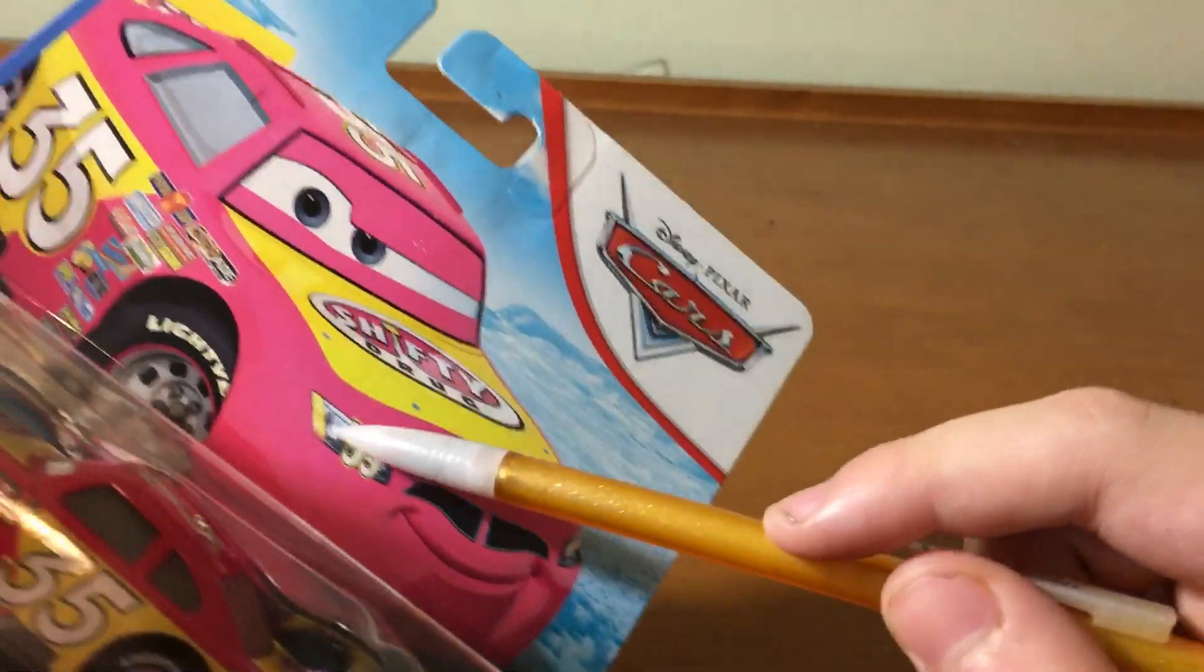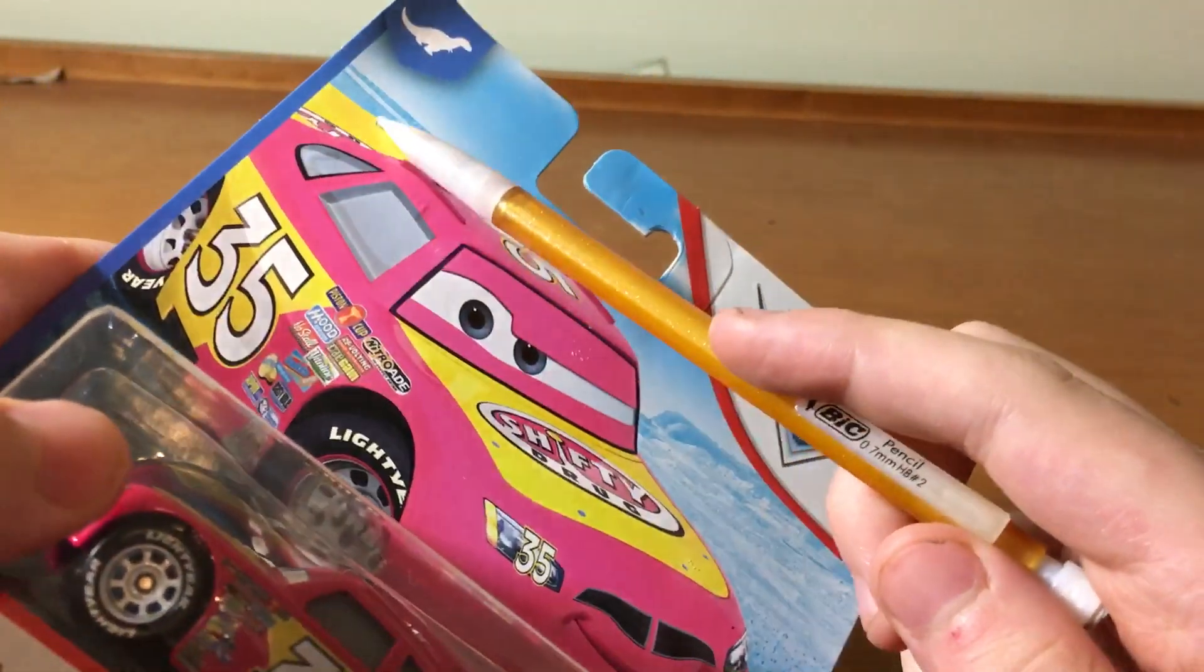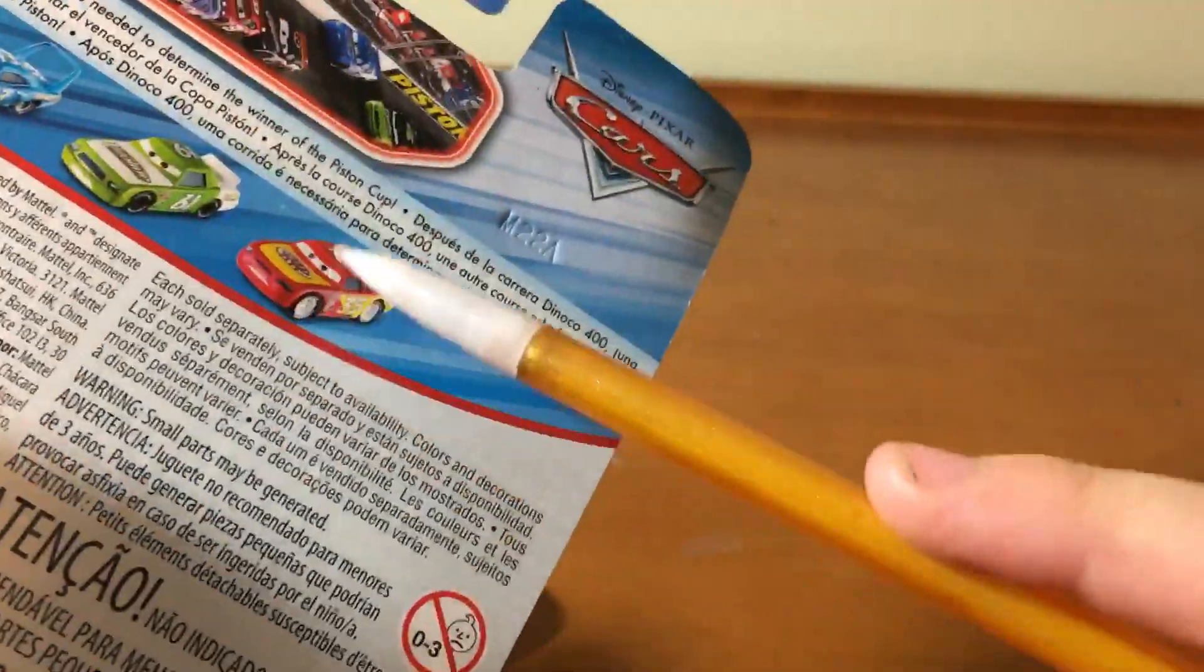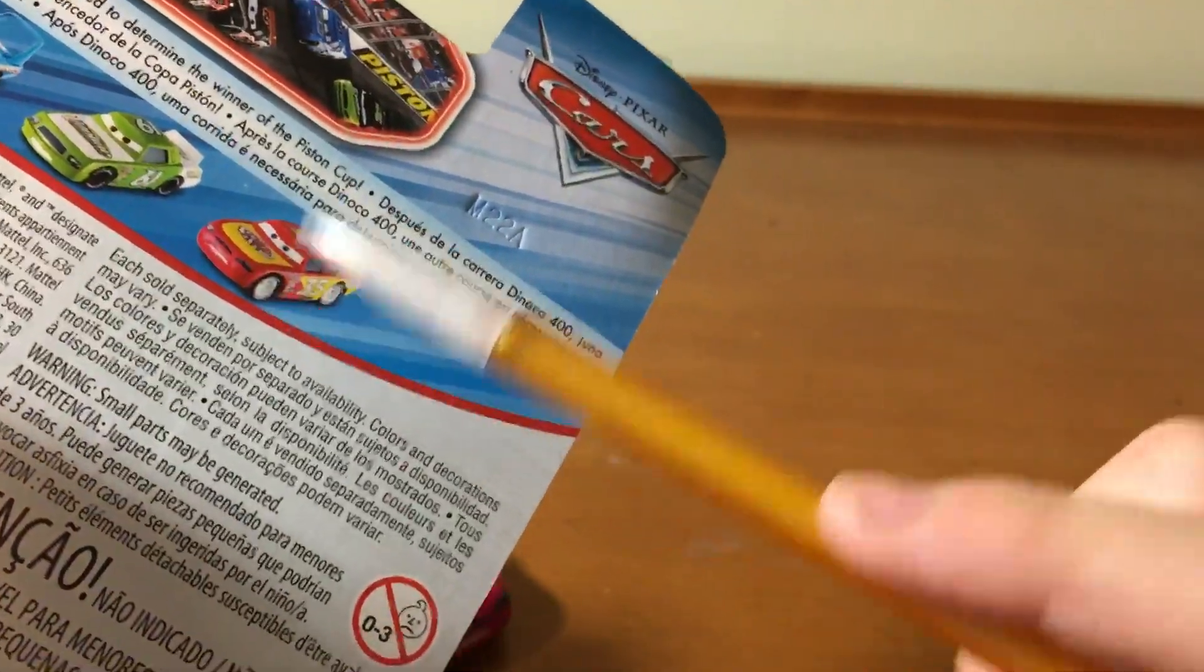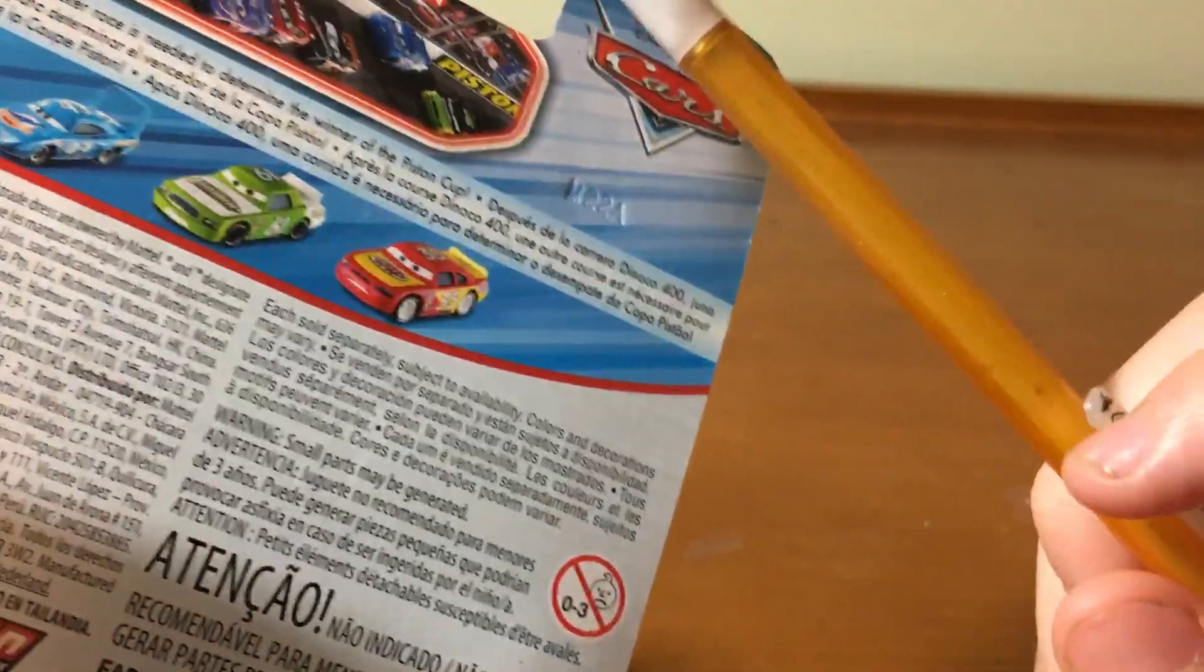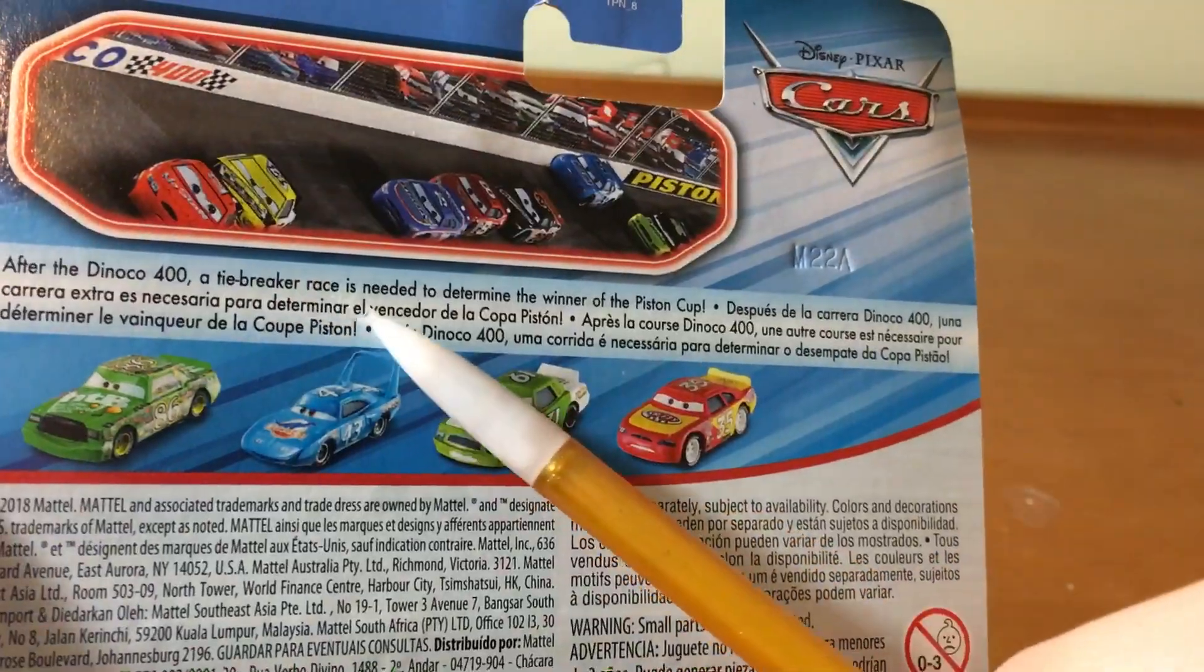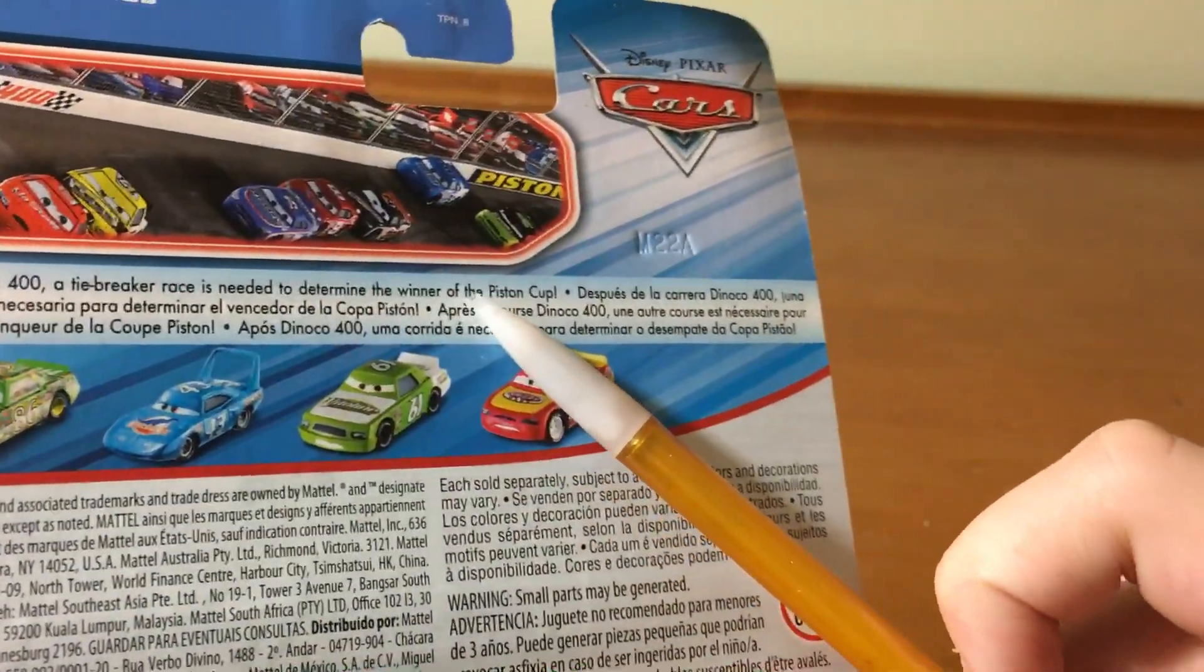The eyes, shifty drug 35, 35, shifty drug on the back. I wish the Thailand counterpart of him was in this color, yeah the red color. After the Dinoco 400, a tiebreaker race is needed to determine the winner of the Piston Cup.